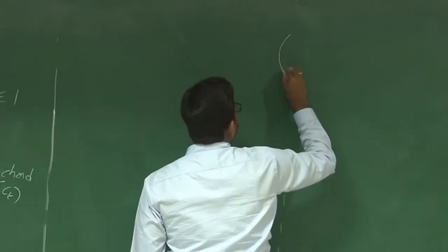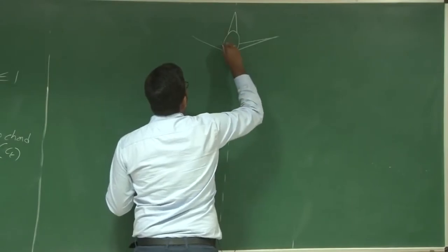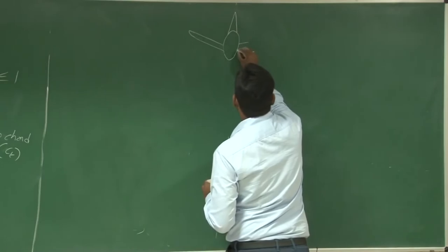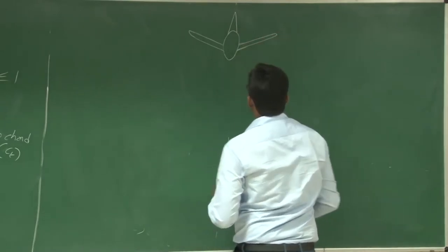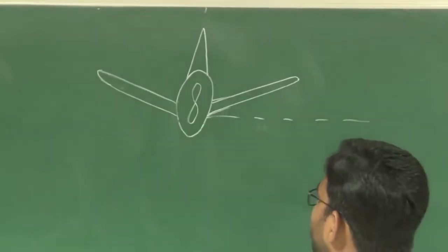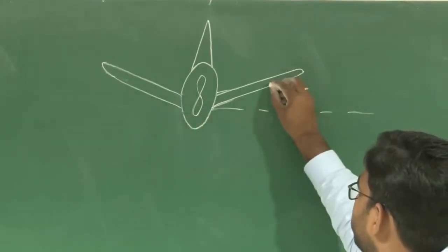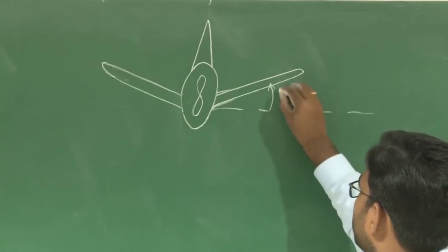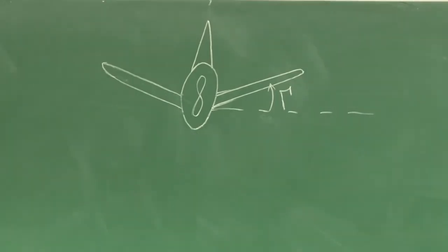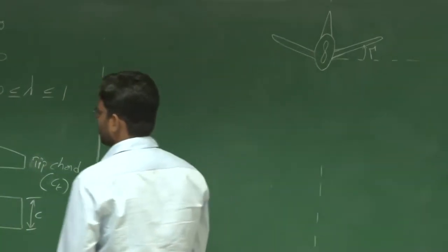We also have something called dihedral. In a front view of the aircraft, the angle made by the wings with the wings-level attitude is known as dihedral. We will see why we need sweep and dihedral, and under what conditions dihedral is required for a wing.